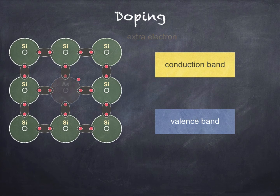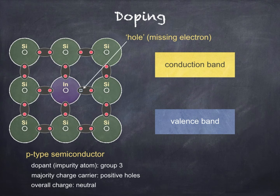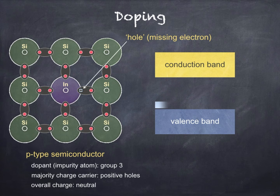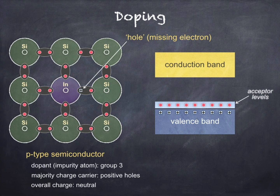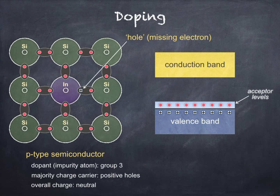Now let's look at P-type semiconductors. This time, the impurity atom or dopant is from group 3, so only three outer electrons are available for bonding with the surrounding silicon atoms. This results in a positive hole, as shown. The impurity atom in the diagram is indium. The addition of group 3 impurity atoms leads to additional energy levels in the band gap, just above the valence band — these are known as acceptor levels. Electrons in the valence band require very little energy to move to the acceptor levels, leaving behind holes in the valence band. This is where P-type semiconductors get their name, because the majority charge carriers are positive holes. Conduction in a P-type semiconductor is due to the motion of these positive holes within the valence band. Again, P-type semiconductors are electrically neutral, since the impurity atoms have an equal number of electrons and protons.